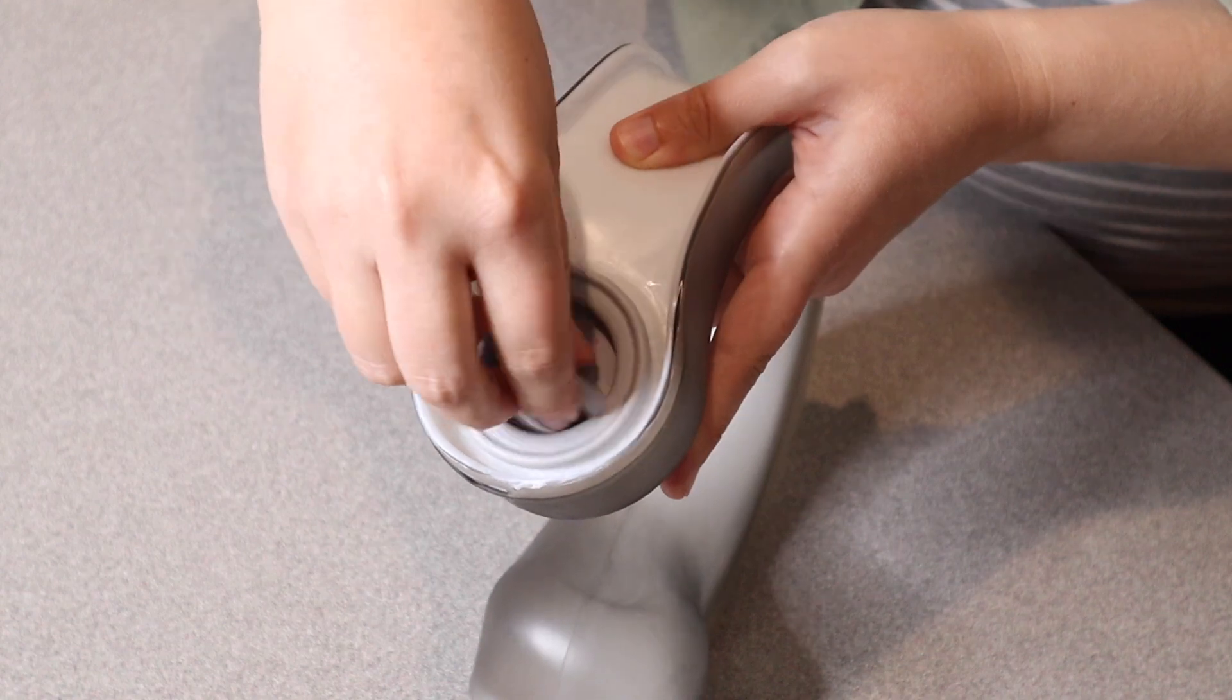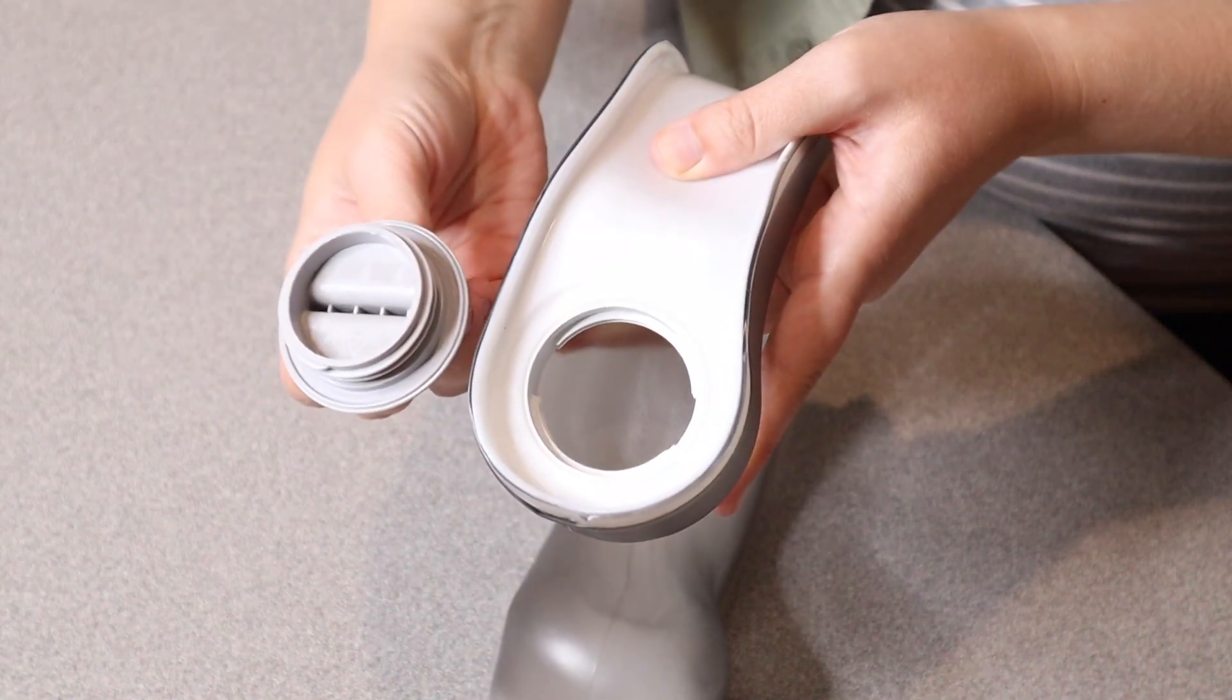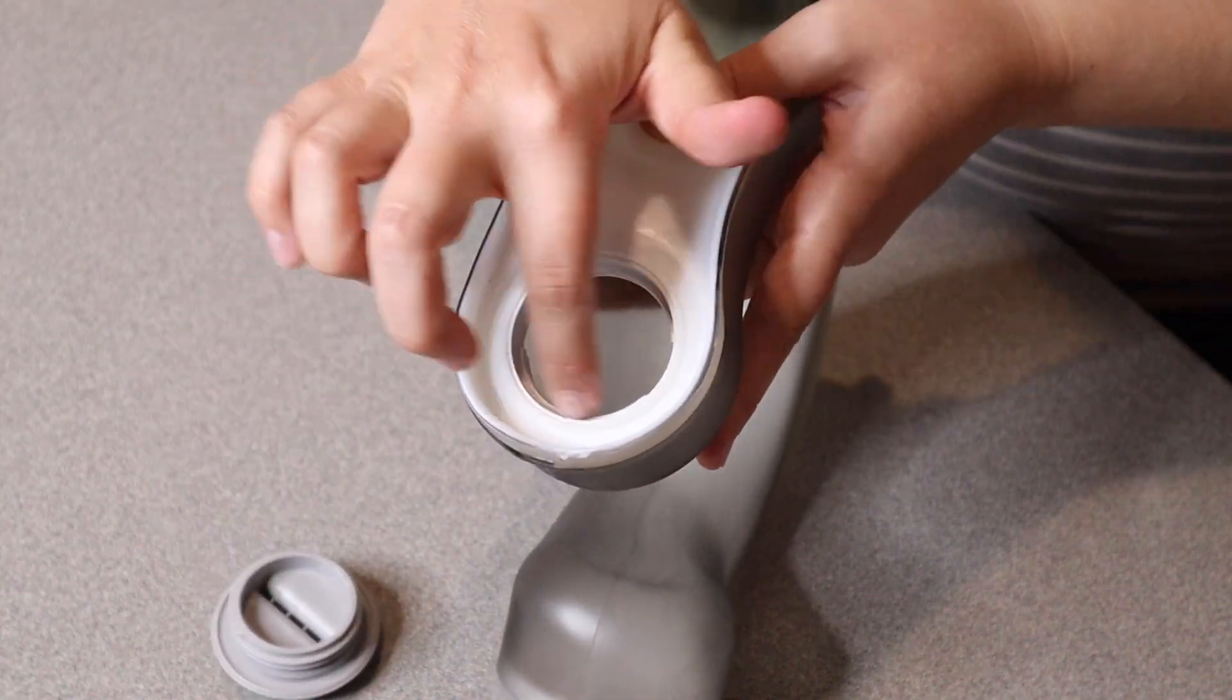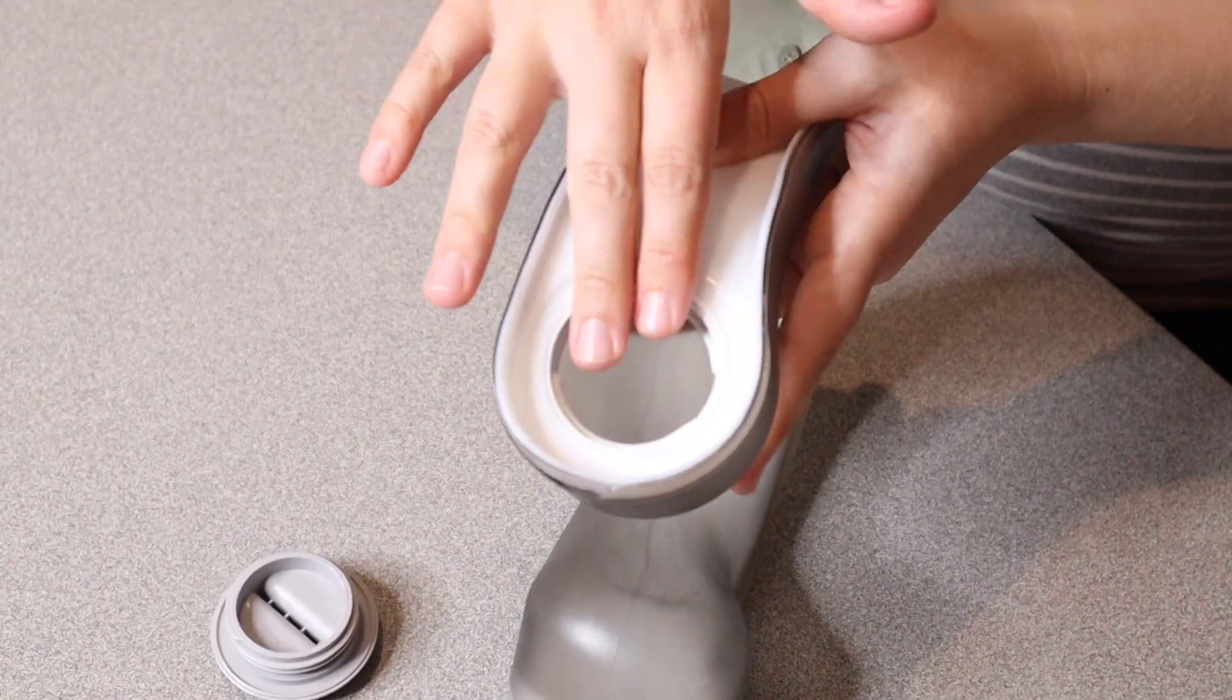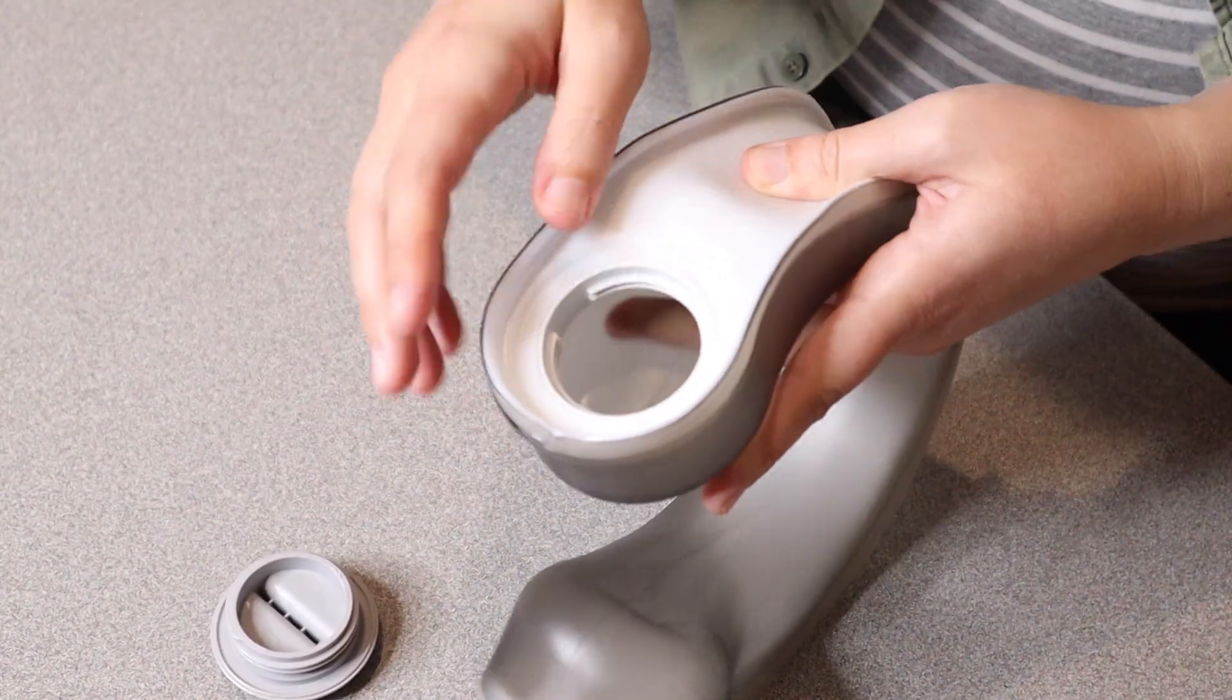You can see on the side here, you just open this little closure. It twists right off. I really like that this has a wide mouth design, so if you want to put ice cubes in here, you can easily do that.